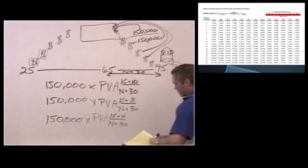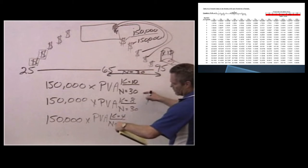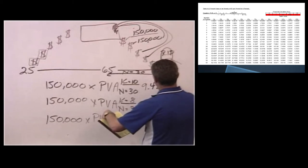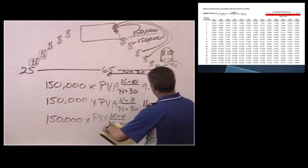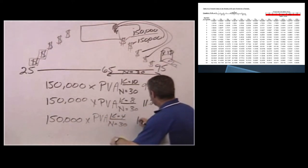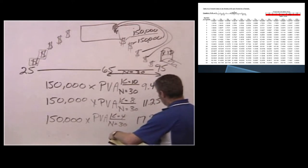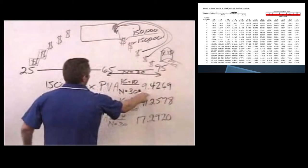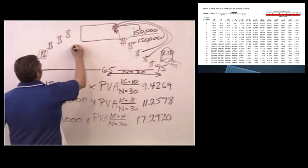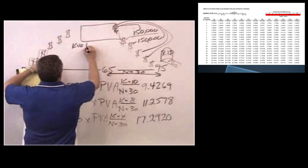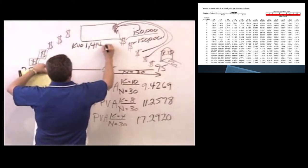Okay. So hopefully you hit pause and you're not cheating your way through. But I'm going to look up these factors, and these factors are going to be 9.4269, and 11.2578, and 17.2920. So if we multiply this across, and I'm earning a 10% rate of return, if K equals 10, then I have to save $1,414,035.